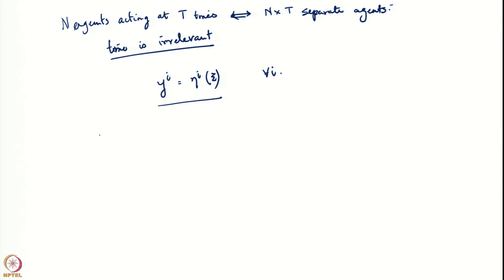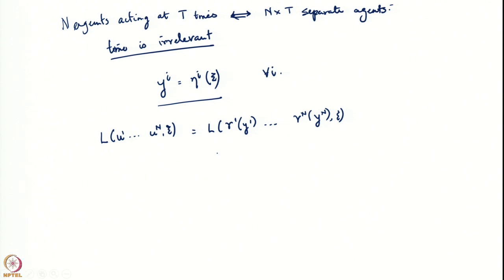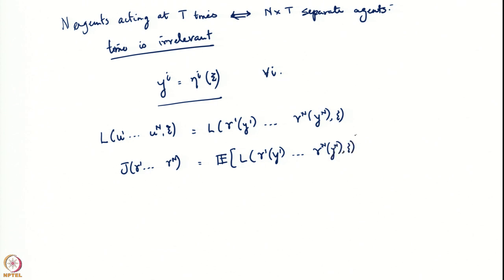In the static team formulation with the time axis removed, the cost is a function of u_1 through u_n and ψ, where each u_i = γ_i(y_i). The problem is to minimize J(γ_1, ..., γ_n), which is simply the expectation of l(γ_1(y_1), ..., γ_n(y_n), ψ), over γ_1 to γ_n. This is the description of a static team problem.